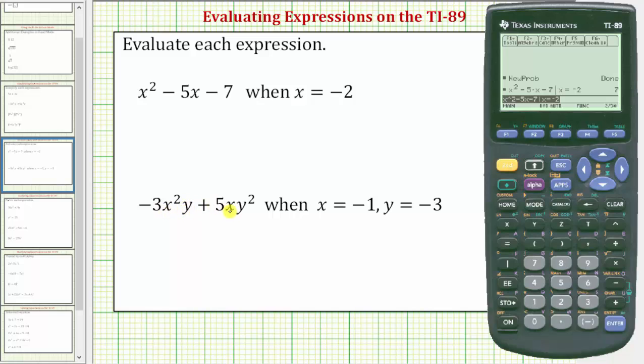So we'll enter negative three, x raised to the power of two times y, and then plus five x times y raised to the power of two.